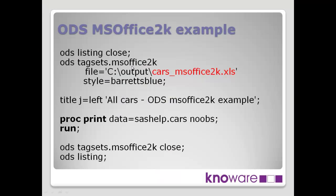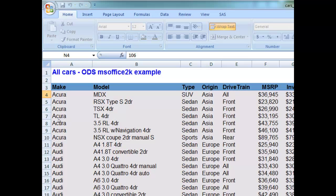Now we're using the MS Office 2K destination, referred to slightly differently as ODS TAGSETS. By saying TAGSETS, we're telling it to go get a particular tag set, which is a way to tell it how to create the output file. The tag set we're specifying is MS_OFFICE_2K. We're creating a file again with the suffix .xls — even though it's HTML we're creating, we tell it to call the file .xls. We can use the same style, Barrets Blue, put a title on, and run the same PROC PRINT. The result, I'm sure you'll agree, looks much nicer than the standard default HTML output. The title is shown, and then the resulting data below — much, much nicer to actually look at.